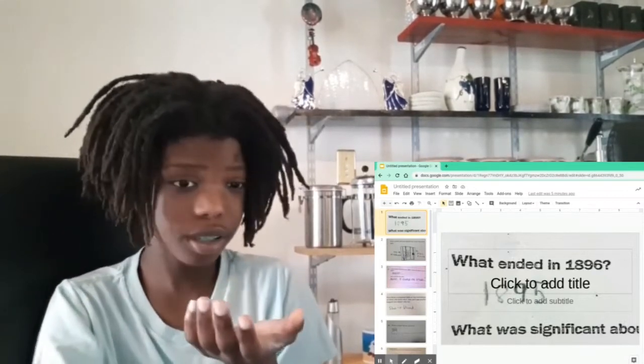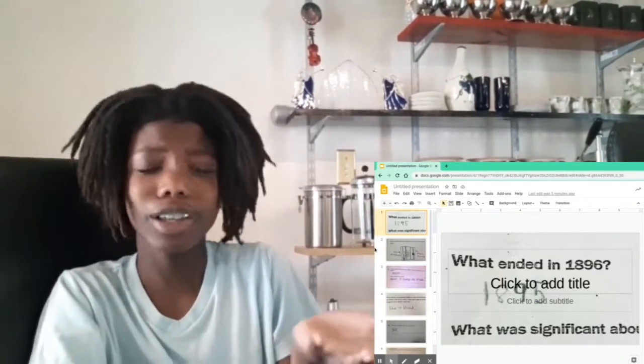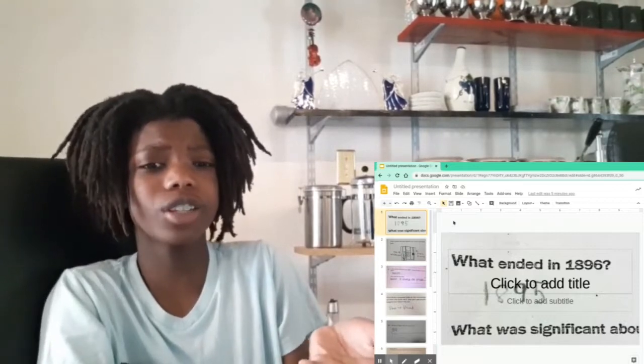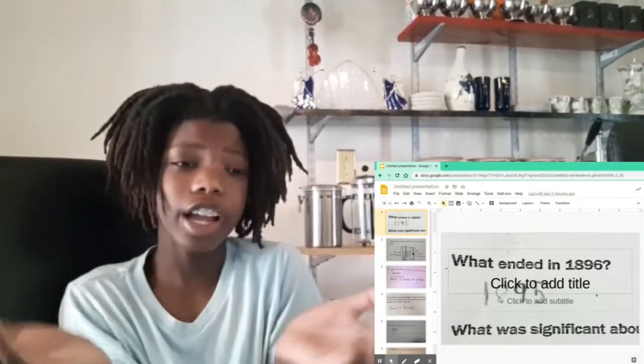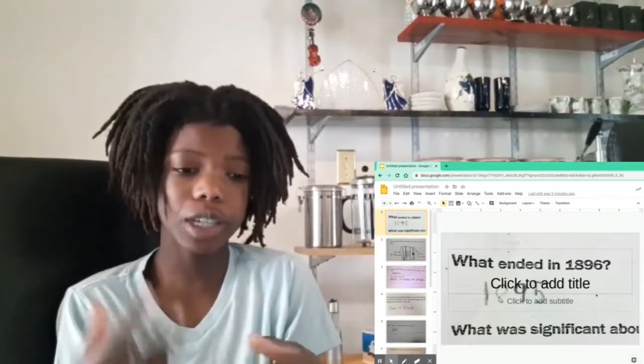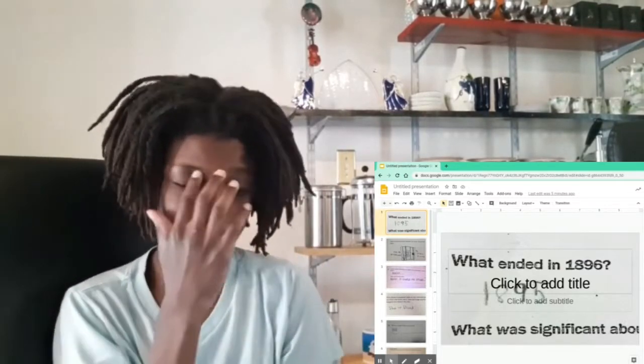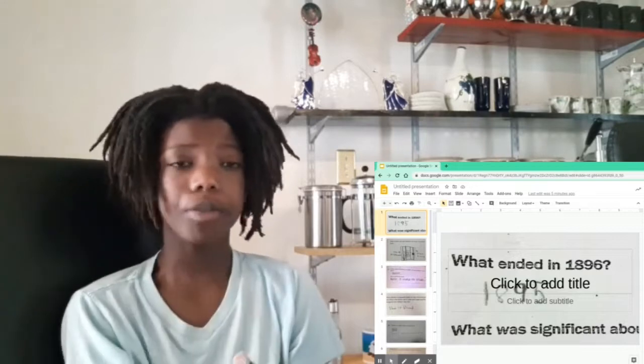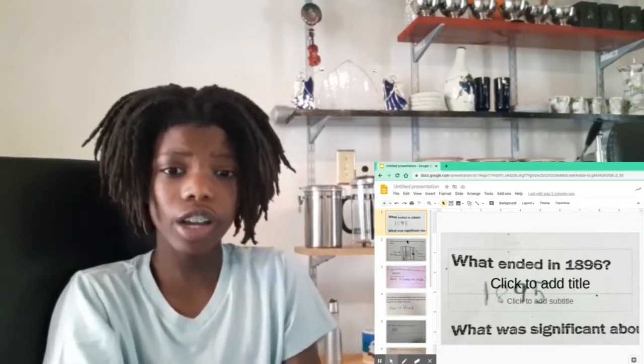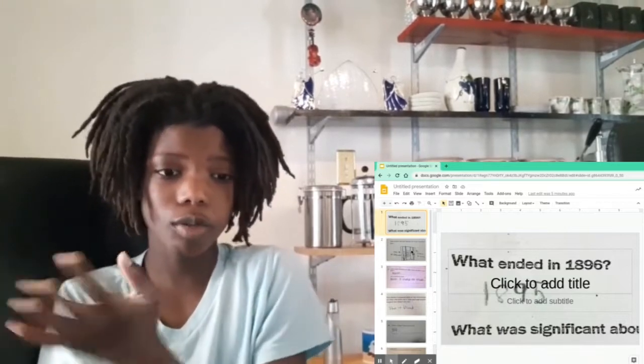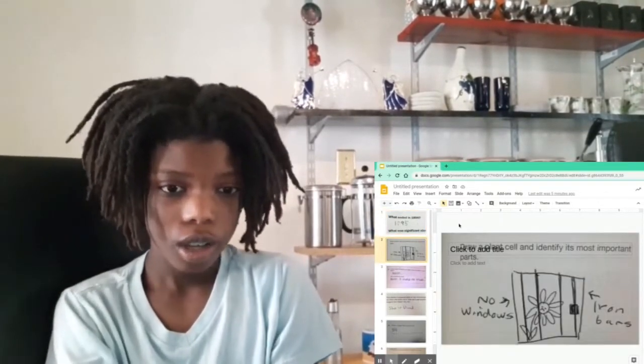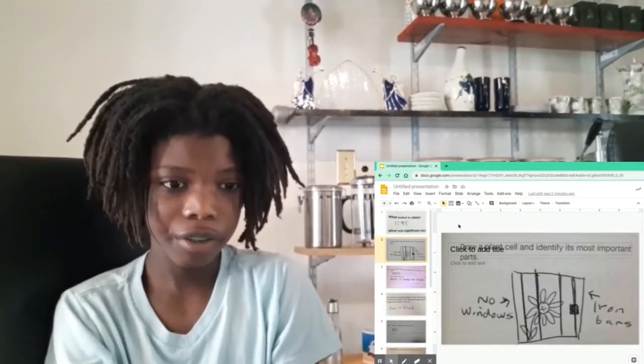1895. I mean he's not right or wrong, I mean he is mostly right. I have honestly mixed up, I don't even know how to explain this, but I'm pretty sure he's right because you were not really specific about what. Next one, all right let's go. Draw a plant cell and identify the most important parts.